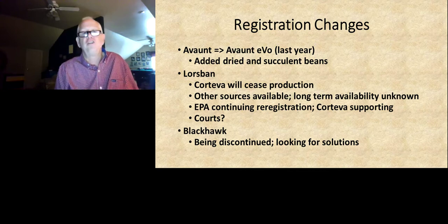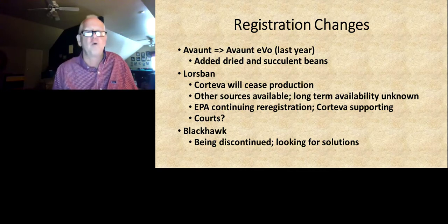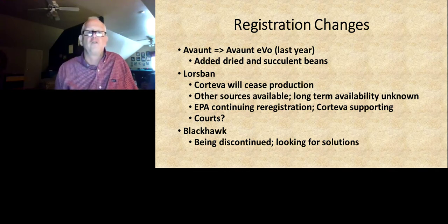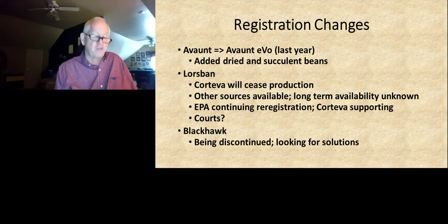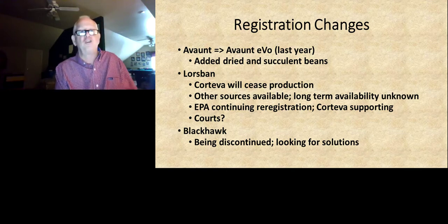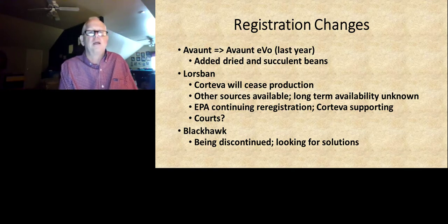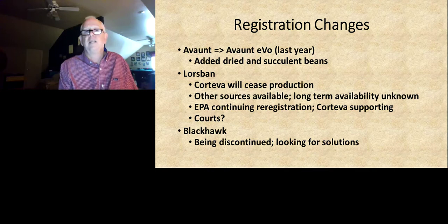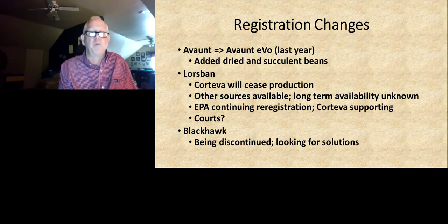Other registration changes to be aware of: one that occurred last year is Avantis moving over to Avant Evo, which is the same active ingredient and same concentration but a different formulation. They indicate it should go into solution better, and they did add dried and succulent beans to the label last year, so you can use it on your snap beans and cowpeas.